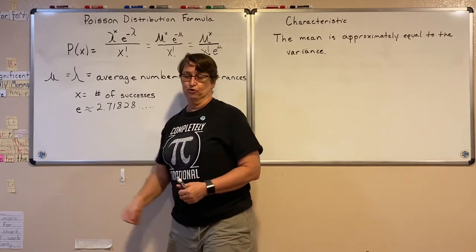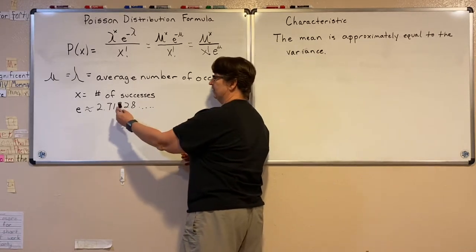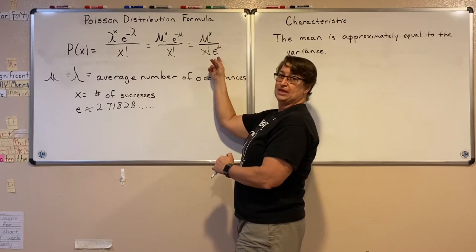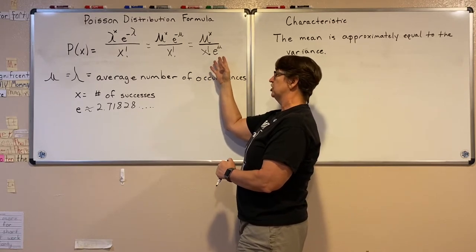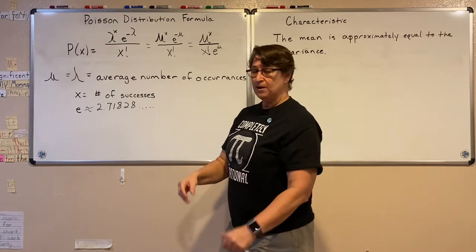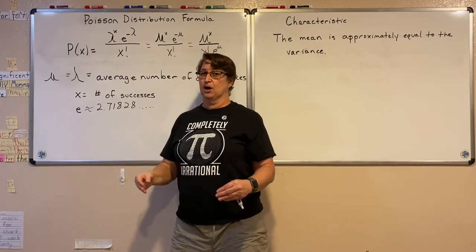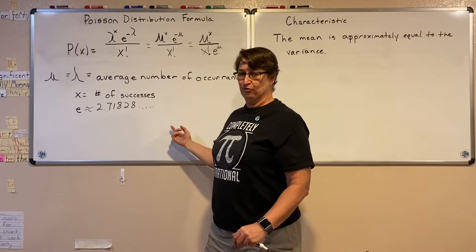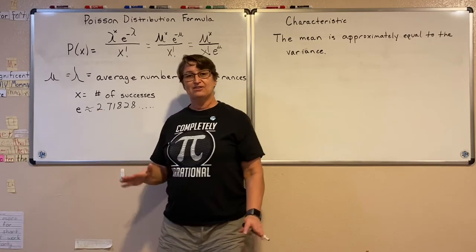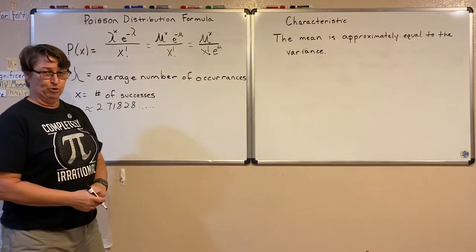Euler's number e shows up over and over again in logarithms in college algebra and finance. When I want an exact form, we leave the letter e because we can't write down the exact number since it goes on forever. If I ask you to approximate, then we make it 2.7 — that's a good approximation. So here is the formula we're going to use when dealing with our Poisson distribution.